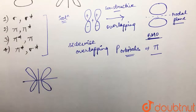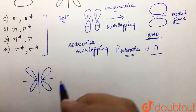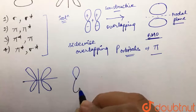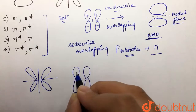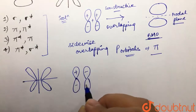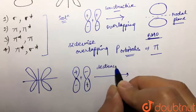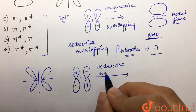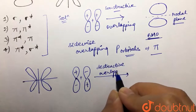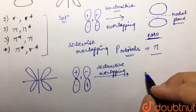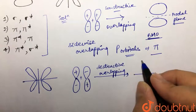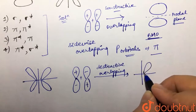Now in the second case, we have a molecular orbital formed again by sidewise overlapping of p orbitals, but this is destructive overlapping. Suppose we have two p orbitals with positive-negative and negative-positive phases — opposite phases are adding, giving us destructive overlapping, and that is how we get this molecular orbital.